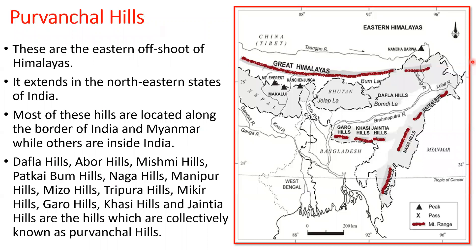The third division of the northern mountains is Purvanchal Hills, also called Eastern Himalayas. They are the eastern offshoot of the Himalayas, extending into the northeastern states of India. Most of these hills are located along the border of India and Myanmar. The known hills of this Purvanchal region include Dafla, Abor, Mishmi, Patkai, Naga, Manipur Hills, Mizo, Tripura, Mikir, Garo, Khasi, and Jaintia Hills — all collectively known as Purvanchal Hills.